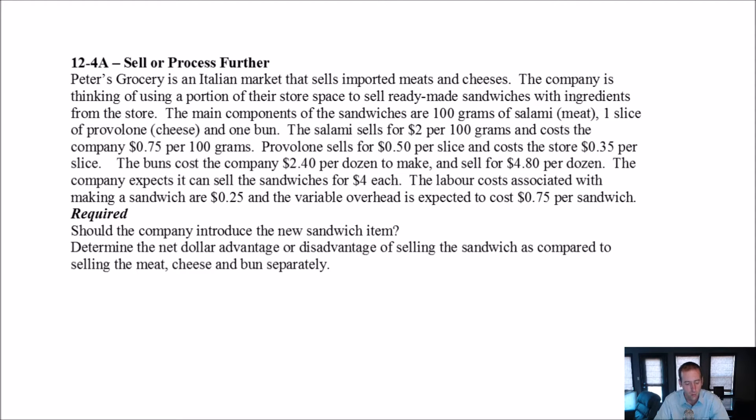We can either sell something now where it's arrived to us in one state, or we can work on it a little bit more and perhaps sell it for a little bit more money. Or we do something to change the product and work on it more, and we can make more money from it potentially. So here's a nice example. Peters Grocery is an Italian market that sells imported meats and cheeses. The company is thinking of using a portion of their store to sell ready-made sandwiches with ingredients from the store. The main components of the sandwiches are 100 grams of salami, one slice of provolone which is cheese, and one bun.